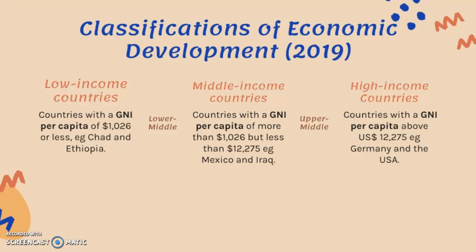Low-income countries are countries with a GNI per capita of $1,026 or less, such as Chad and Ethiopia. Middle-income countries have a GNI per capita of more than $1,026 but less than $12,025, and include countries like Mexico and Iraq.